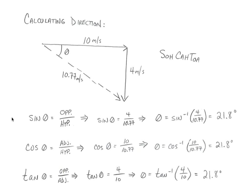Since I have all three sides, I can use any trig function; if you only have two sides, select the appropriate one. Applying sine: sine of theta equals opposite over hypotenuse, which is 4 over 10.77. To solve for theta, I take the inverse sine of 4 over 10.77, which gives 21.8 degrees. So the final answer is 10.77 meters per second at 21.8 degrees off of the x-axis.